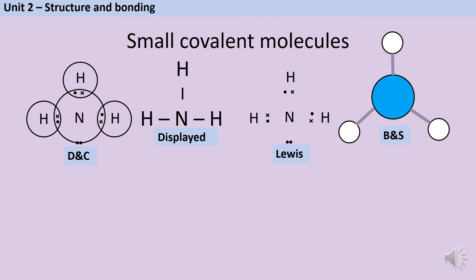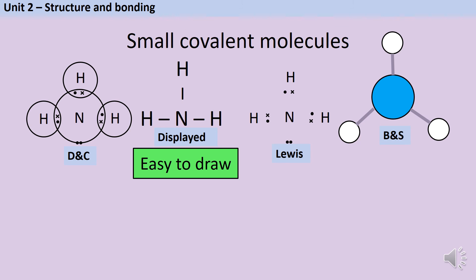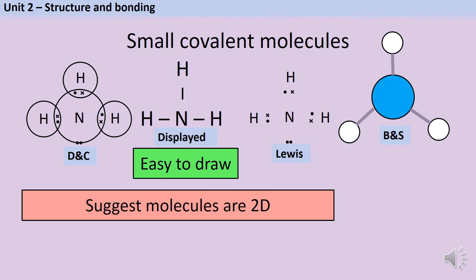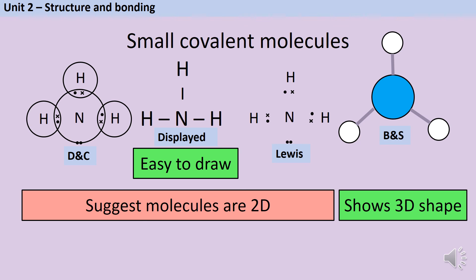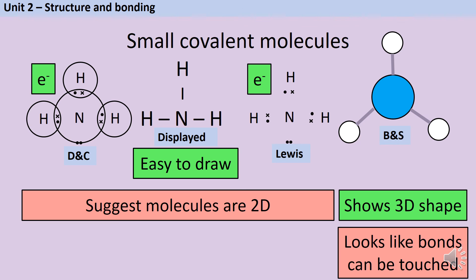Each of these models has its own advantages and disadvantages. You don't need to know the names of the models, but it helps to explain the trade-offs. The displayed formula using single straight lines is just the easiest one to draw, so it makes more sense for complicated molecules. One problem with the dot and cross diagram, displayed formula, and Lewis diagram is that these molecules look flat — 2D — when they really are not. Whereas with a ball and stick diagram, it is possible to show the 3D shape of the molecule. One advantage of the dot and cross diagram and the Lewis diagram is that we can see the electrons, helping us understand that a covalent bond is a shared pair of electrons. Whereas with the ball and stick diagram, the bonds look like physical objects separate from the atoms, which is not accurate.